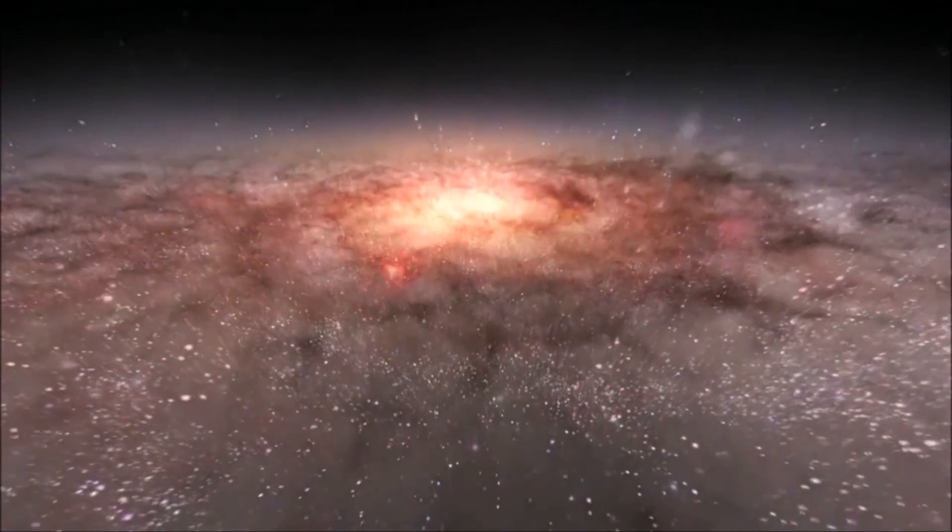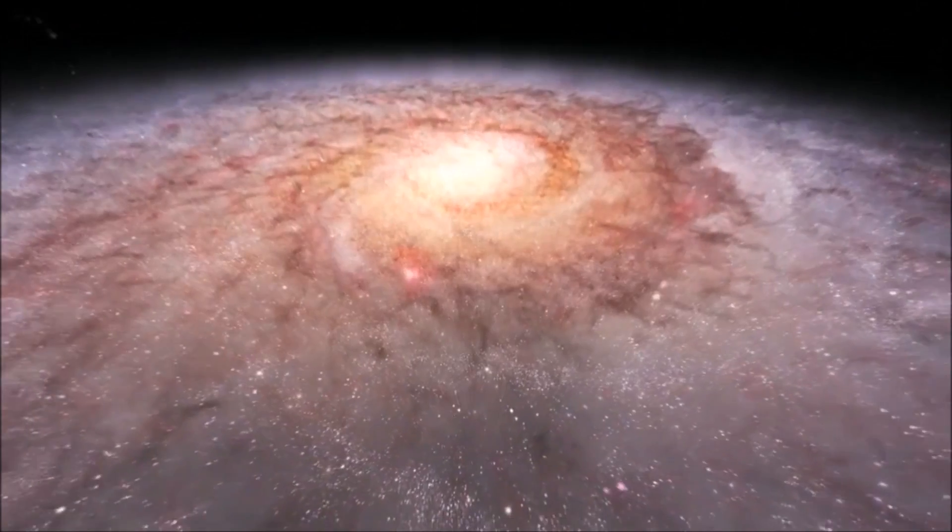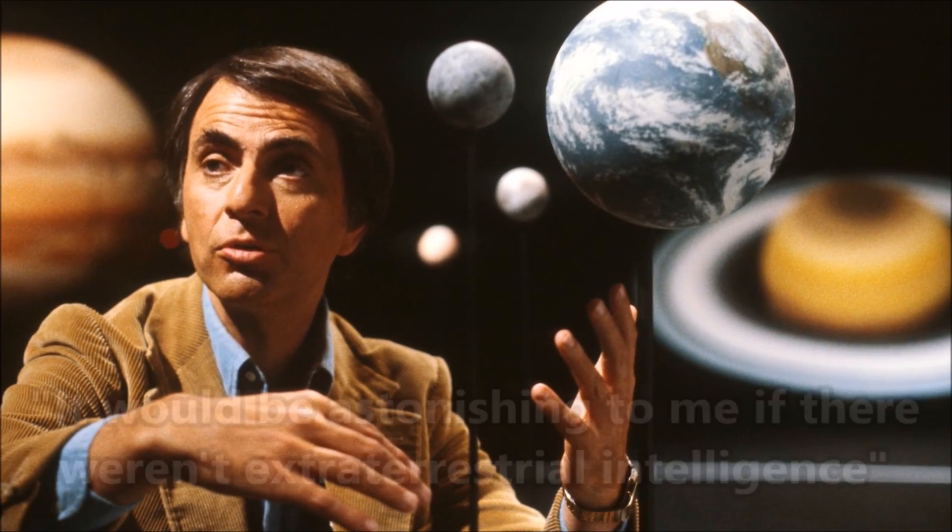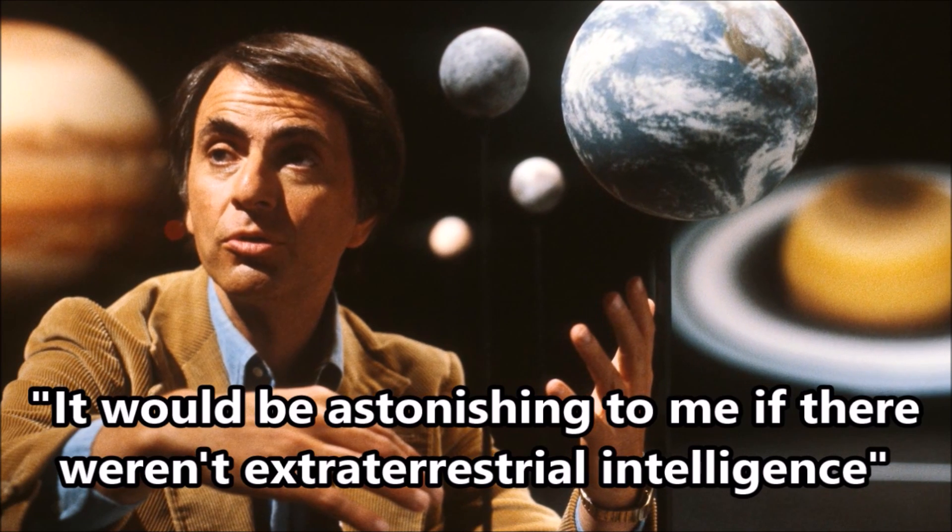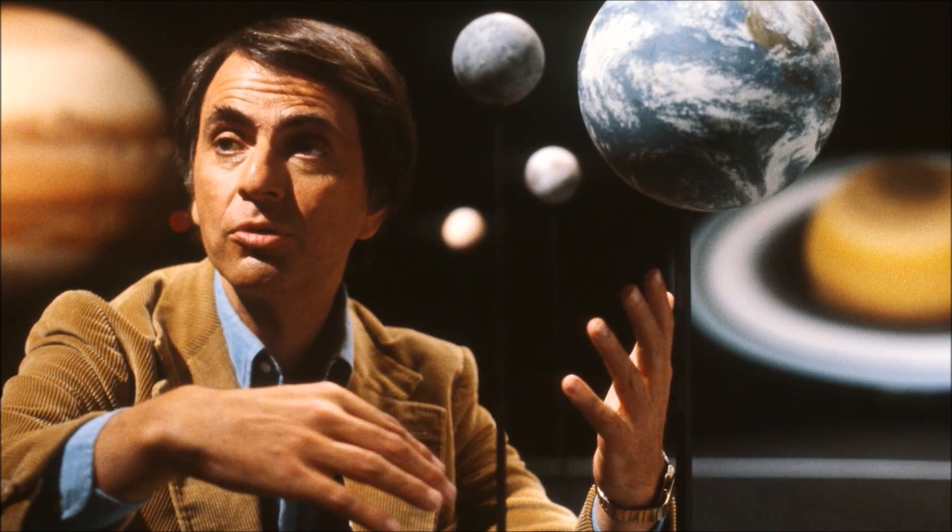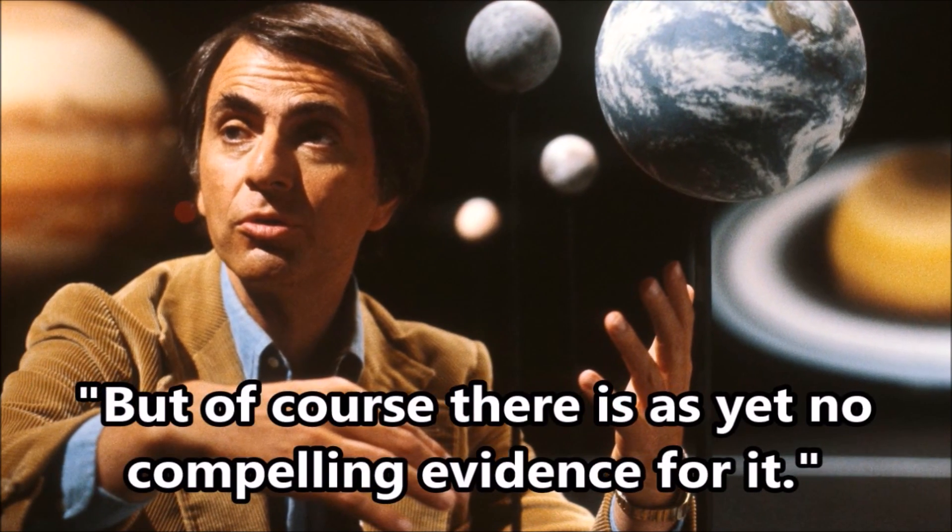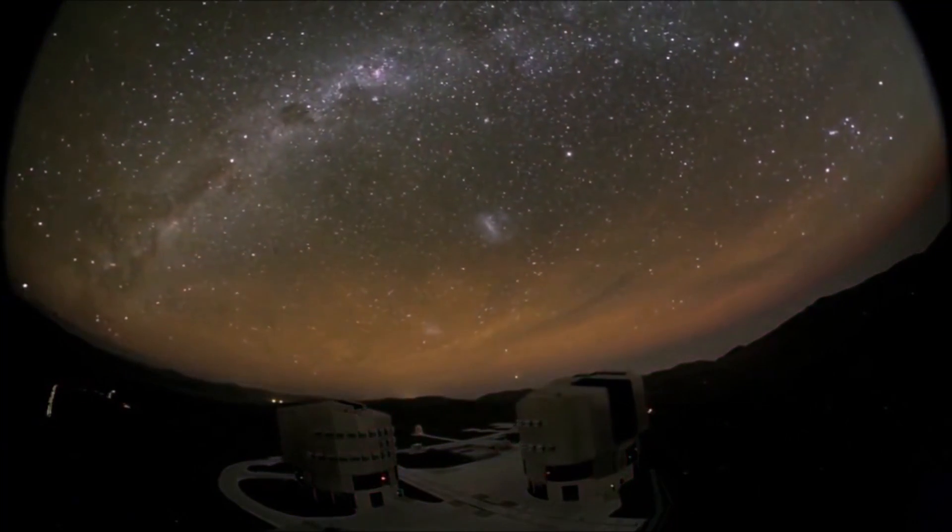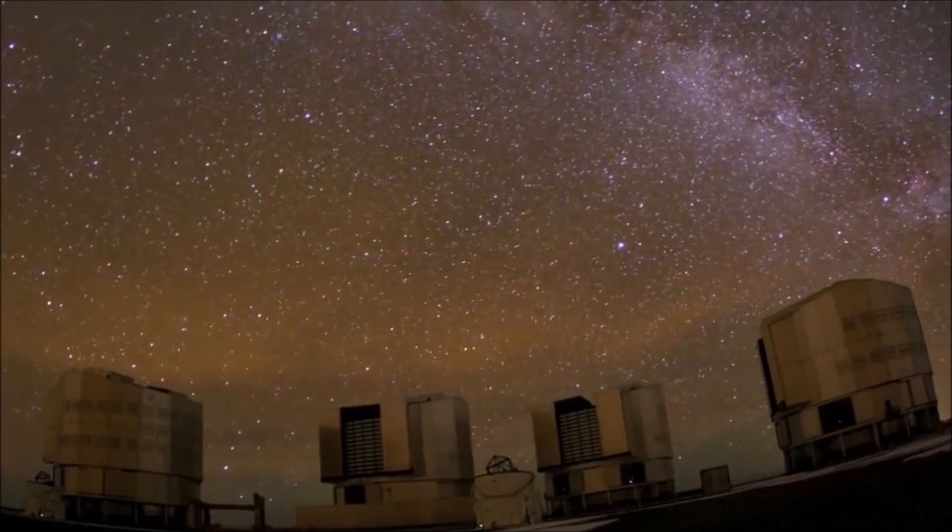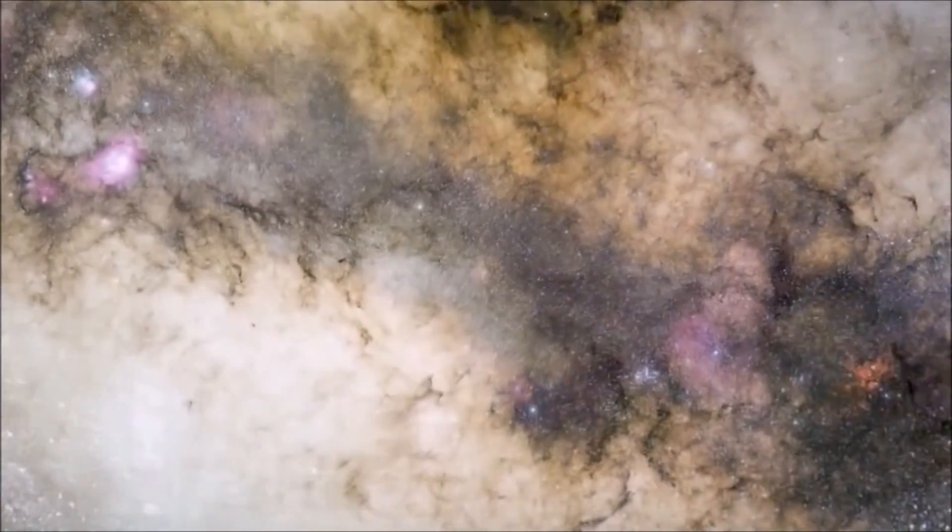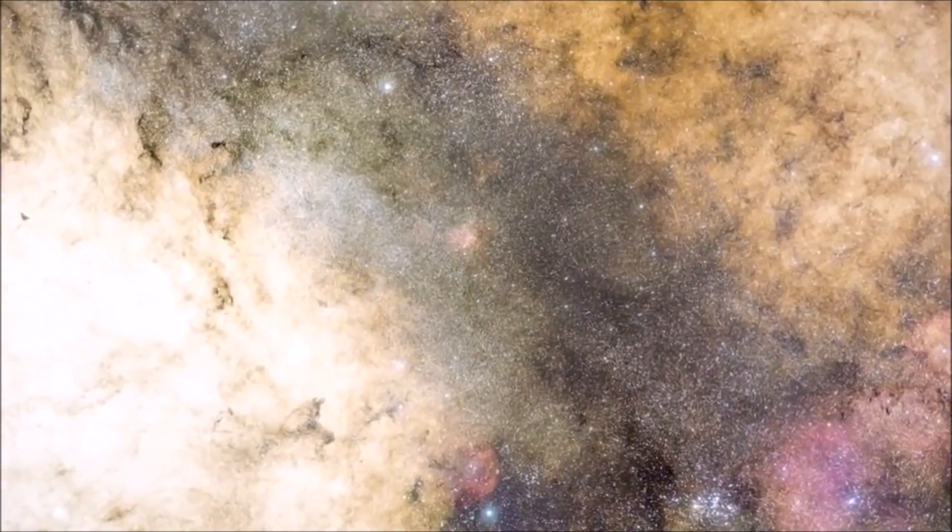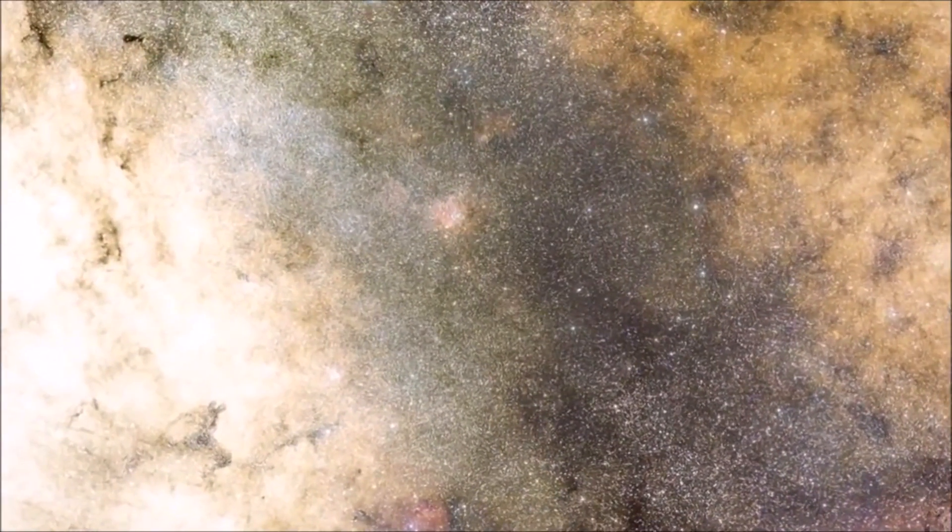Sooner or later we all ask the question, are we alone in this universe? Beloved American cosmologist Carl Sagan once said, it would be astonishing to me if there weren't extraterrestrial intelligence, but of course there is as yet no compelling evidence for it. But we're going to challenge that statement by observing new discoveries made by advancements in technology since Sagan's death in 1996. Let's take a look at five of the most realistic possibilities for extraterrestrial life in the known universe.